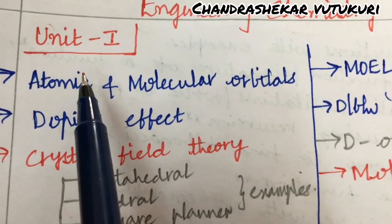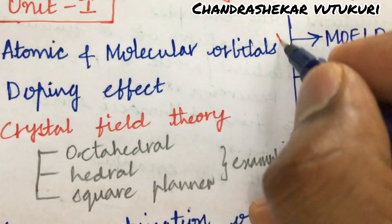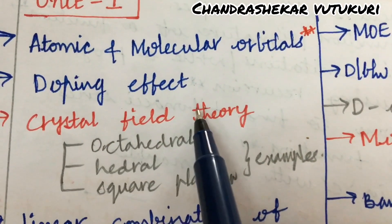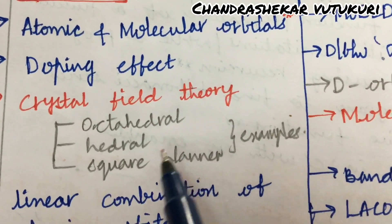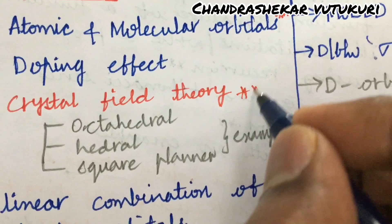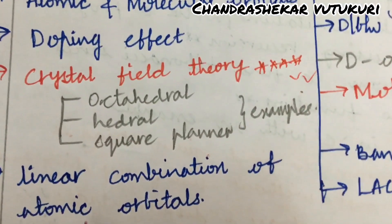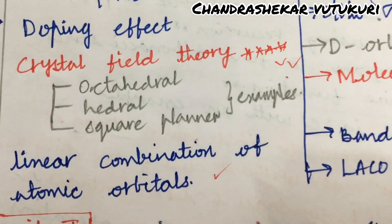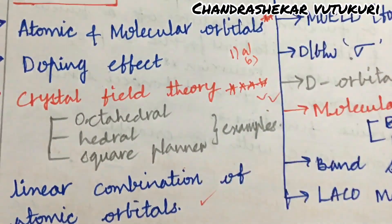The first and foremost gunshot question I can give you is atomic and molecular orbitals, said to be a very important question, and the doping effect. Crystal field theory related to octahedral, tetrahedral, or square planar along with the examples is said to be the topmost gunshot question, dear students. The linear combination of atomic orbitals (LCAO) is said to be very important — from this part we can expect 1-A as well as 1-B.